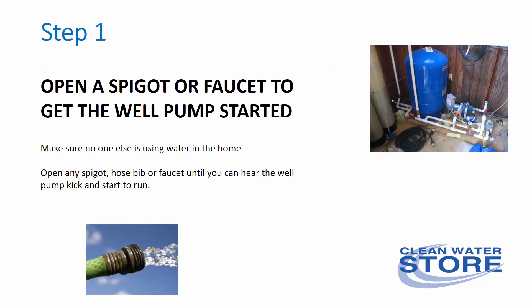Here are the easy steps to take. Step 1: open a spigot or faucet, also sometimes referred to as a hose bib, and get the well pump started. Make sure no one else is using water in your home at the time. You're basically opening up a spigot, hose bib, or faucet and running water until you can hear the well pump kick in and start to run, or you hear the pressure switch click, or you hear water running from the well.